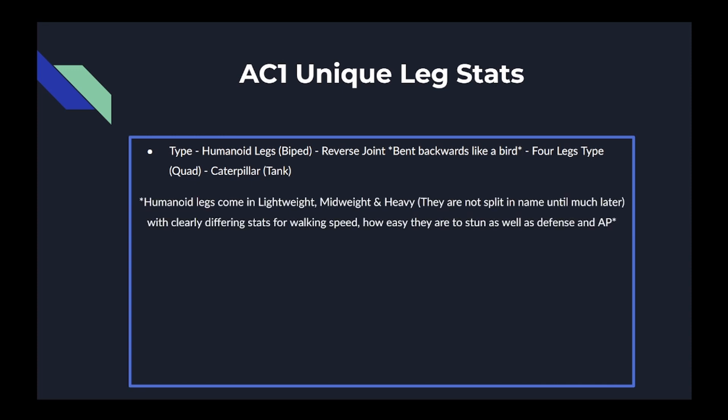Humanoid legs come in lightweight, medium weight, and heavy weight.